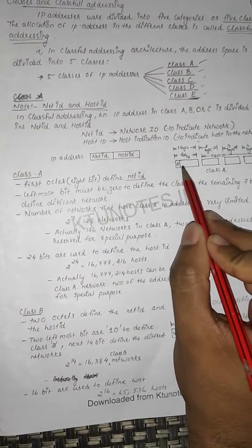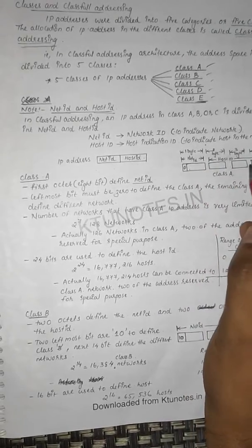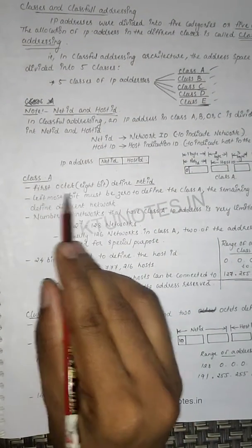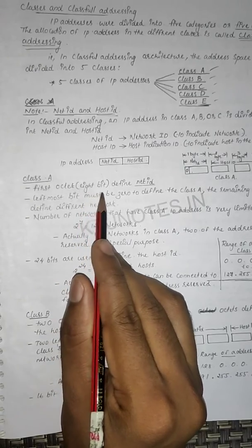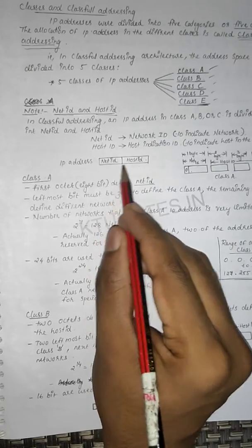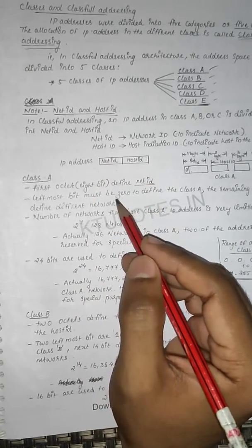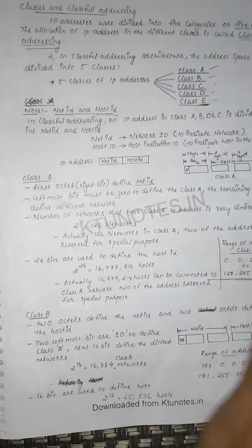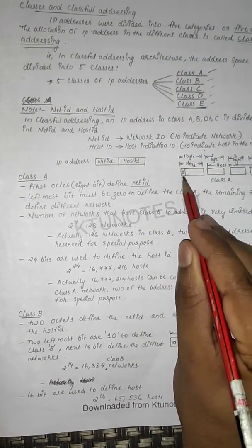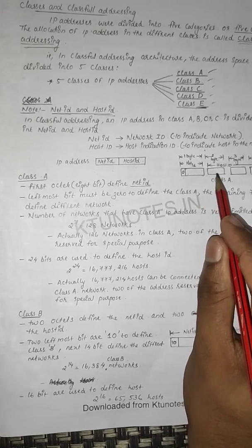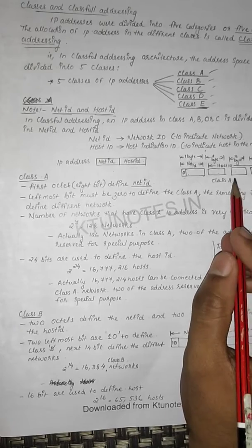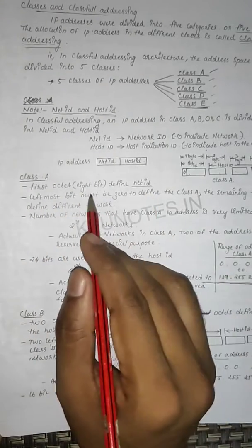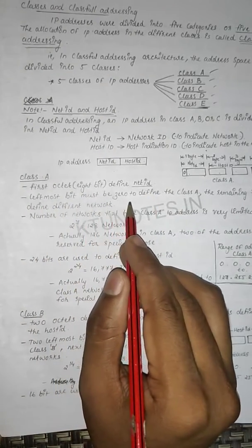In the case of Class A, the network ID part occupies the first octet — that means 8 bits — defining the Net ID. The total IP address is 32 bits, and the first 8 bits represent the Net ID in Class A. The remaining three octets (8+8+8 bits) are the Host ID. The leftmost bit must be represented as 0 in Class A.